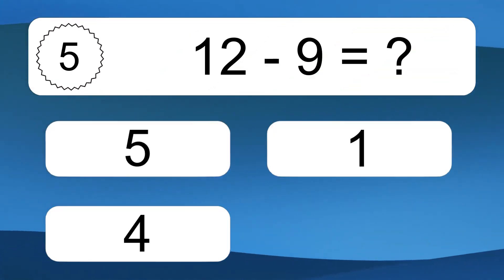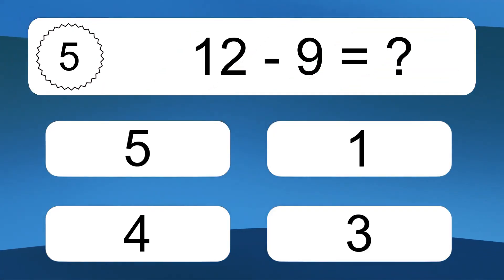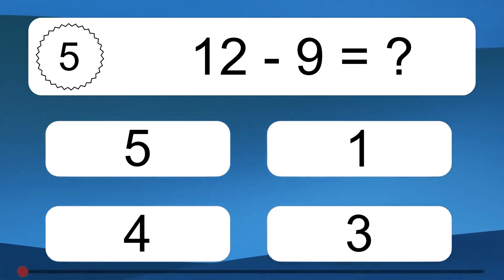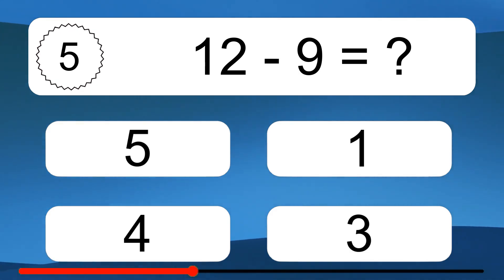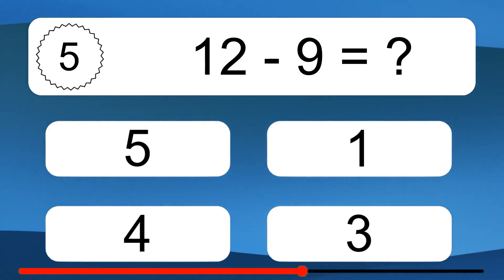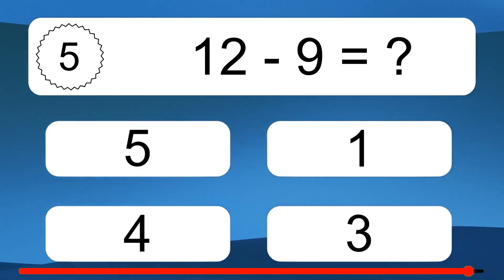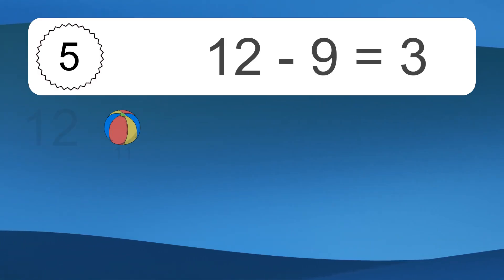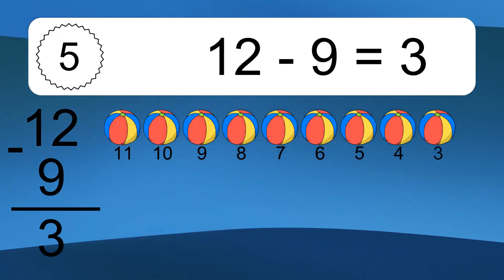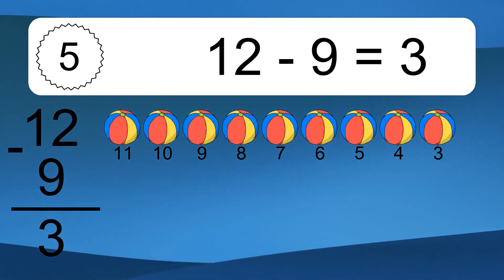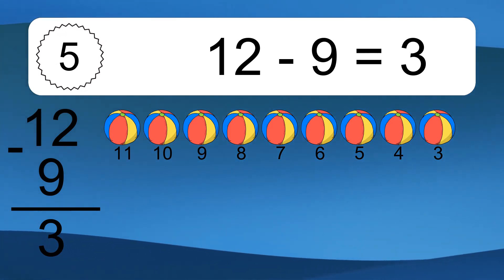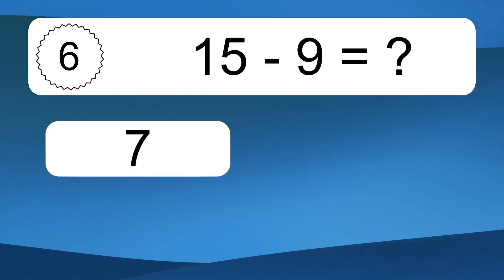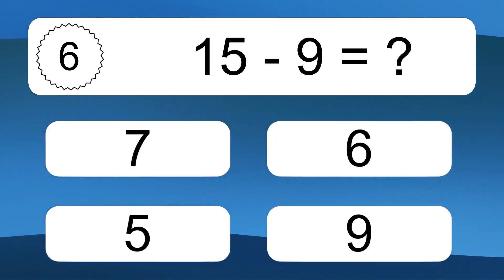12 minus 9 equals what? 12 minus 9 equals 3. Let's count it. 11, 10, 9, 8, 7, 6, 5, 4, 3.